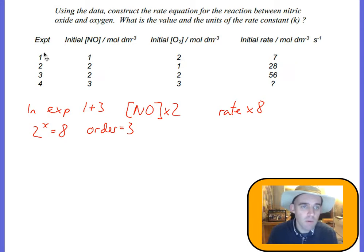But experiments 1 and 3, I can see it's gone from 1 to 2, so it's been times by 2. The rate has gone from 7 to 56, so that's been times by 8. You think of it: 2 to the power of something equals 8, from the factor by which the rate has changed. So 2 to the power of 3 equals 8, so the order for the concentration of NO in this rate equation will be 3.